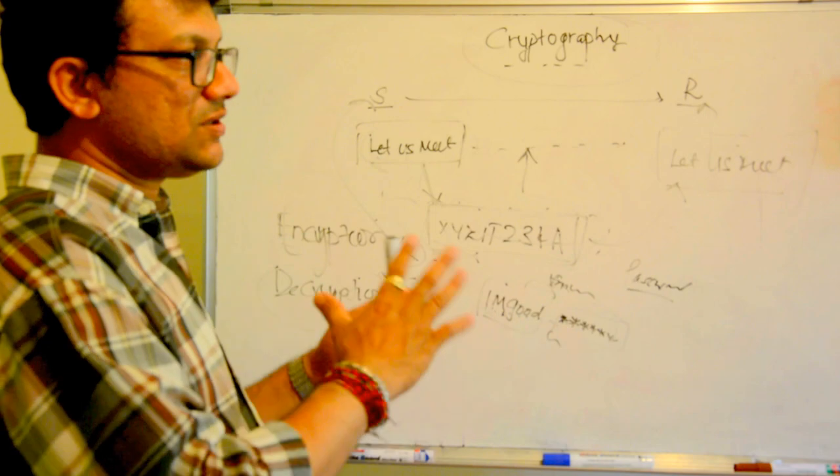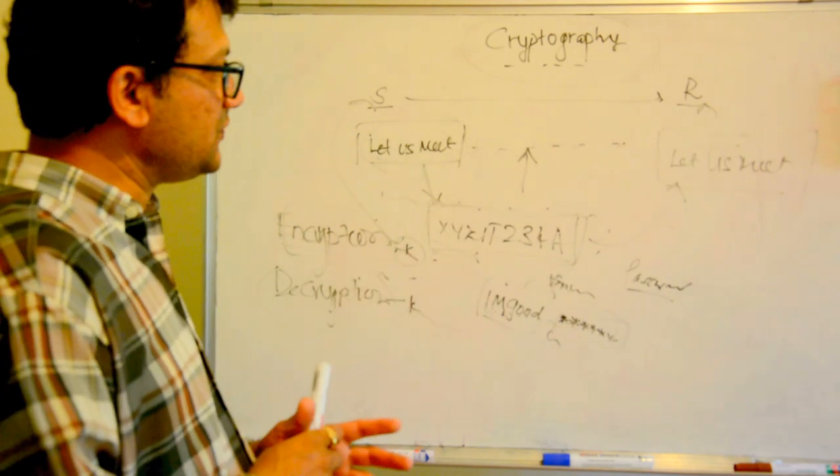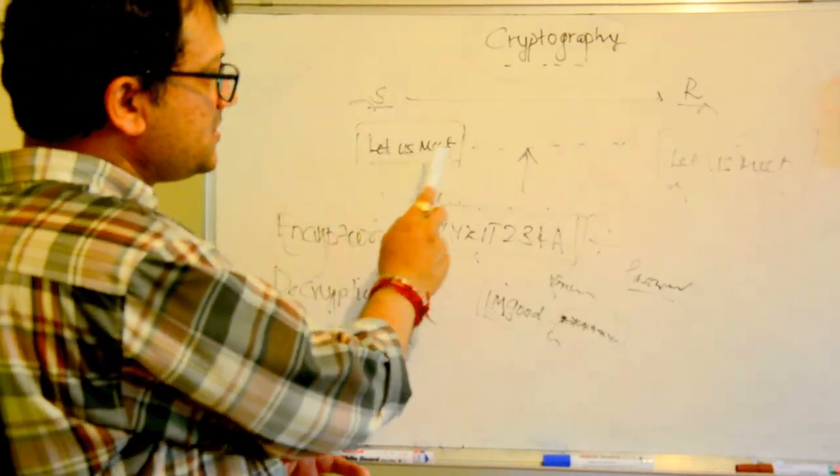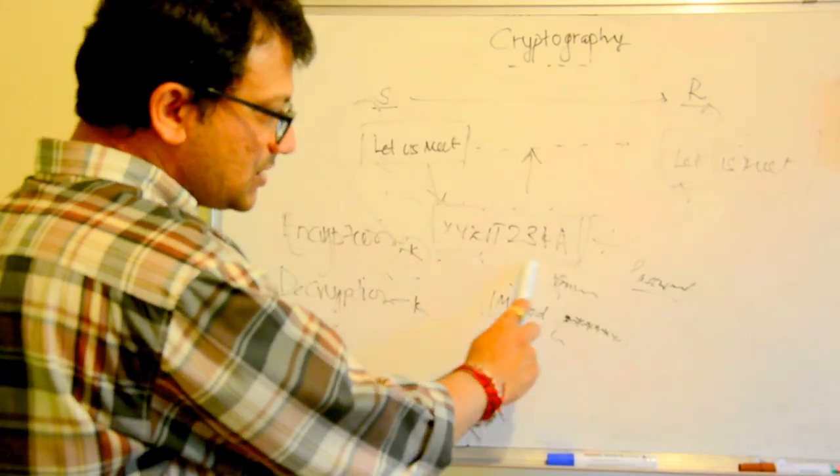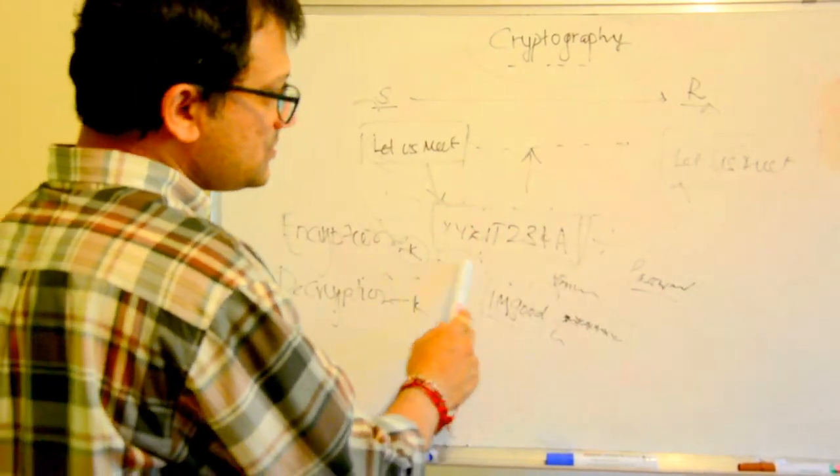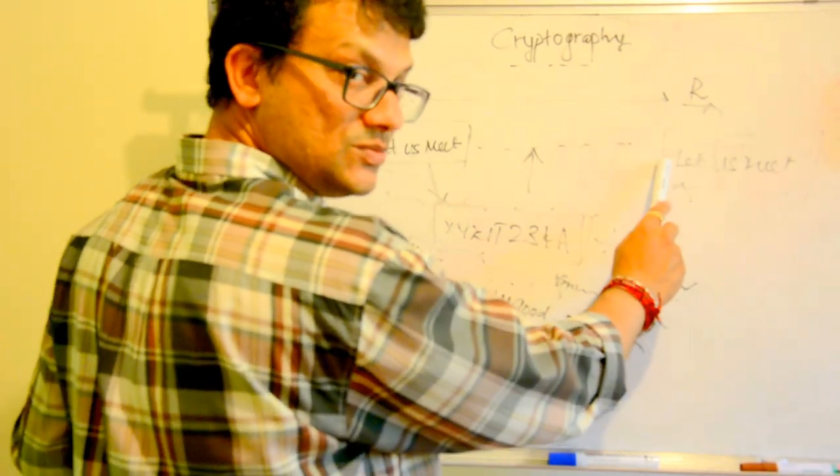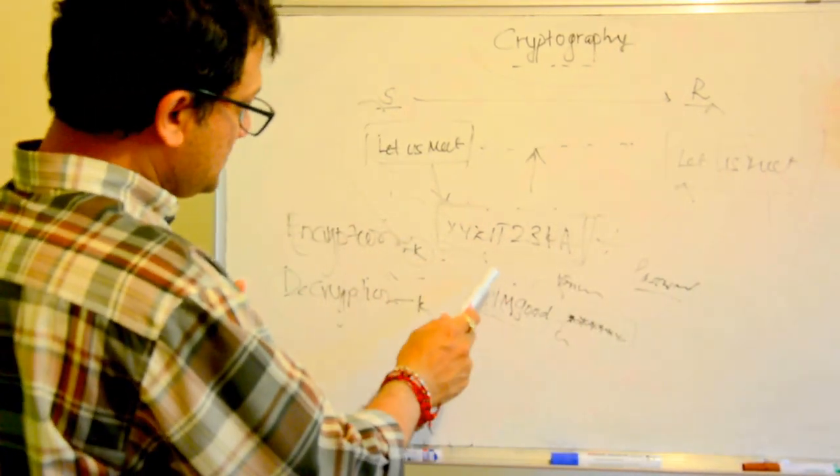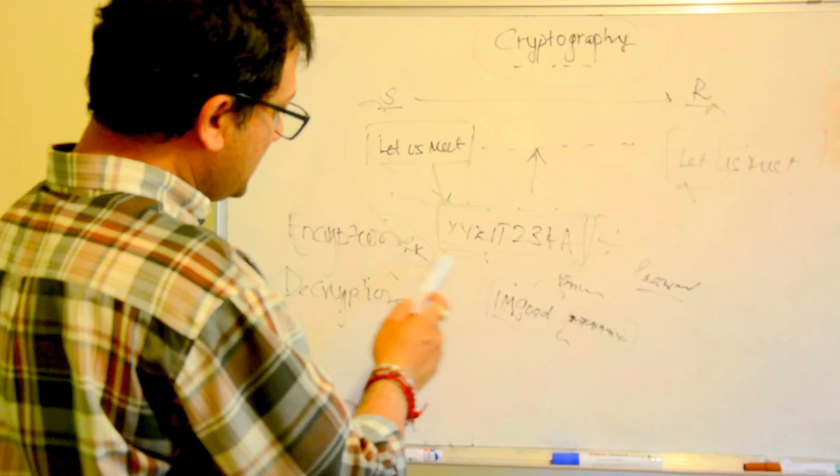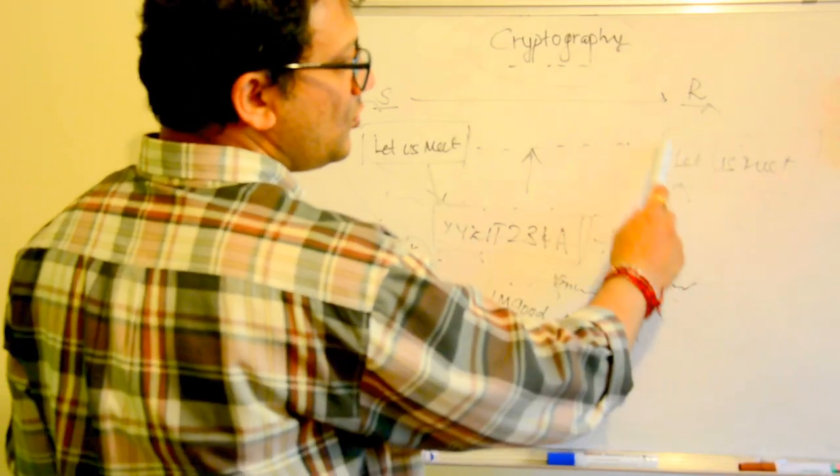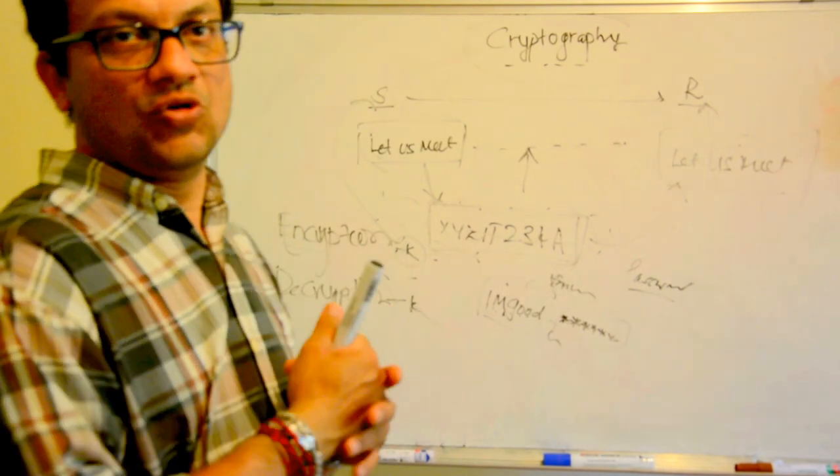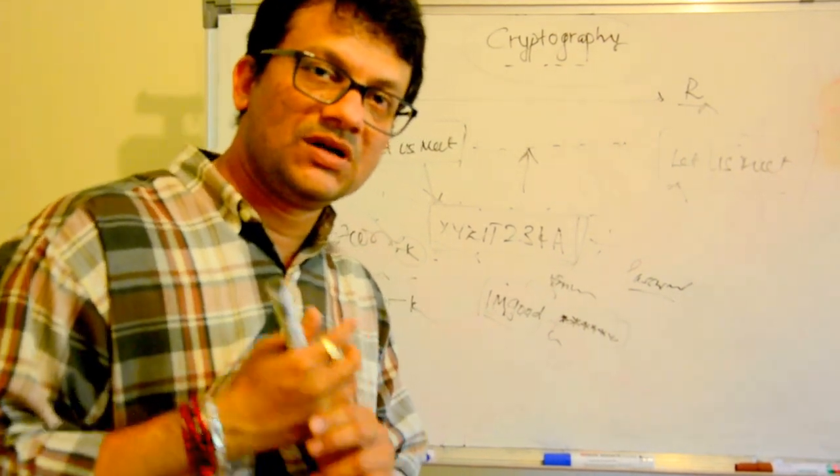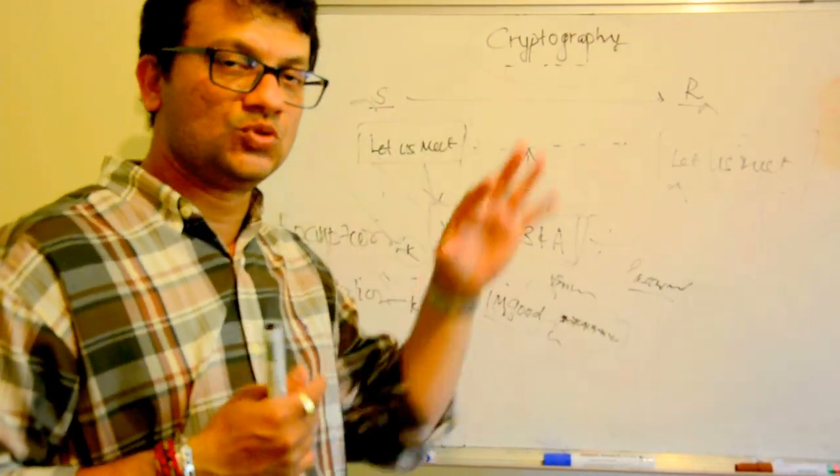But as of now, this is what I have to touch base on cryptography. So: sender of a message, the message, encryption key, encrypted or transformed message, the process, the same message getting decrypted to becoming a normal message for the receiver. With this, I hope it gives you a simple understanding of what is cryptography.